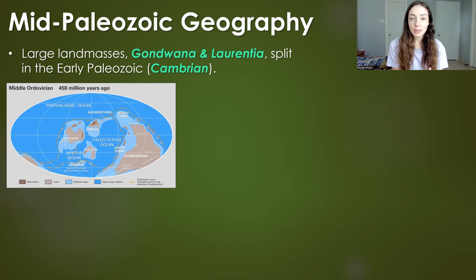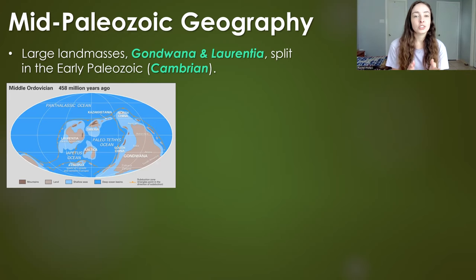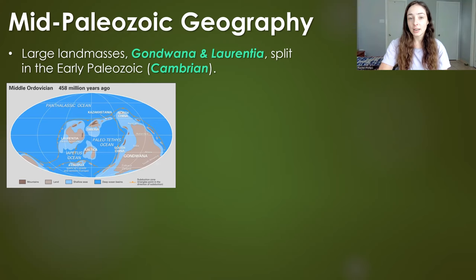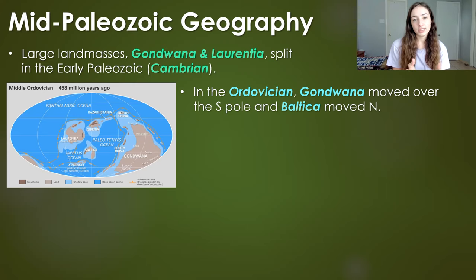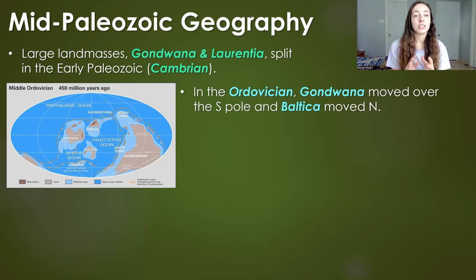Going back to the Early Paleozoic for context: the two main large land masses, Gondwana and Laurentia, had formed by splitting from a supercontinent present before the Paleozoic in the Precambrian. Those two major continents were accompanied by other minor land masses like Baltica and Siberia. In the Ordovician, Gondwana moved over the South Pole, which caused major glaciation that ended the Ordovician with mass extinction.